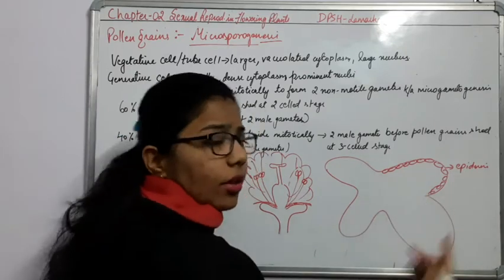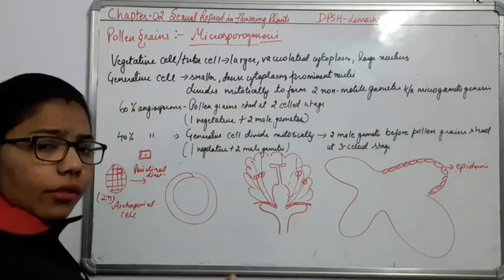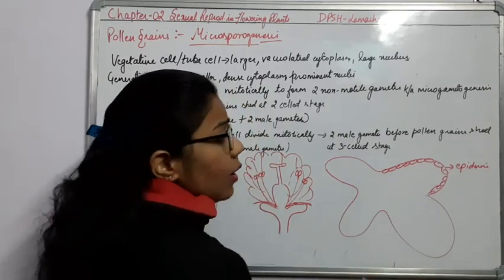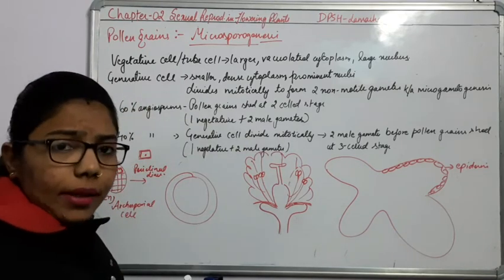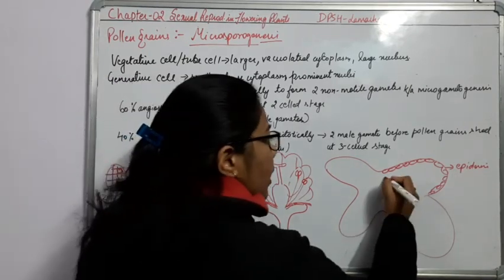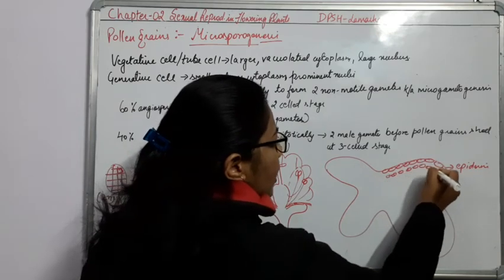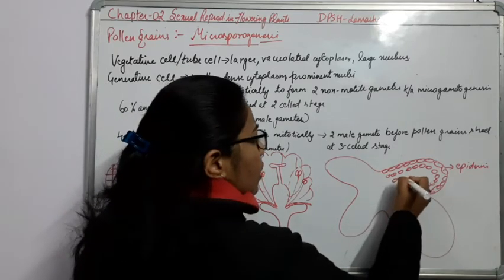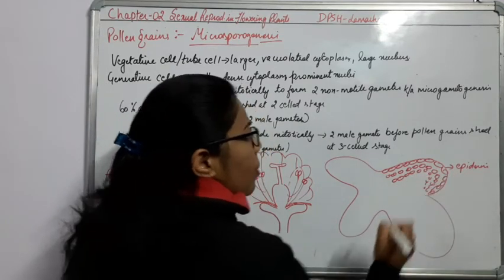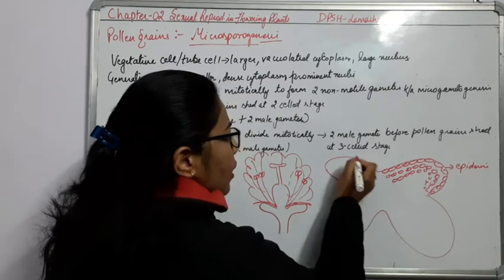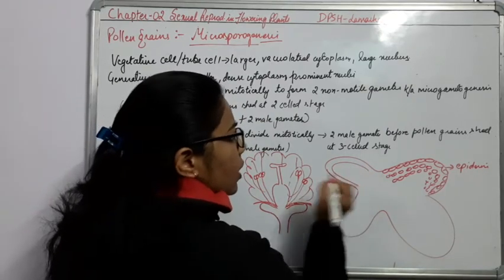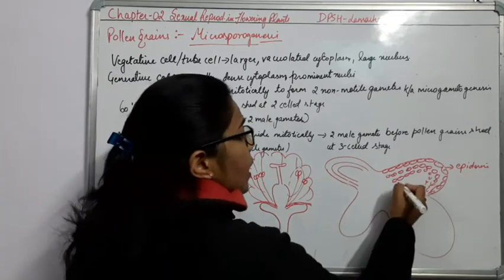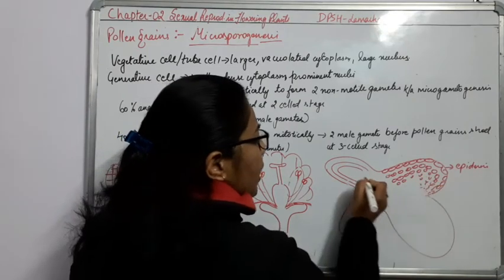Again it will undergo division and form some other layers. The layers are: epidermis, then endothecium inner to that, then another layer — the middle layer — and inner to the middle layer there is another layer known as the tapetum. Inside this tapetum, pollen grains are present.